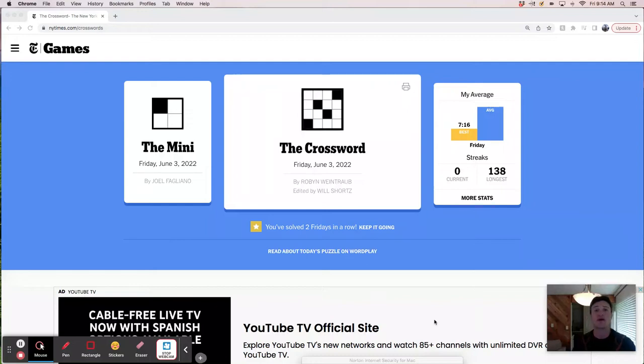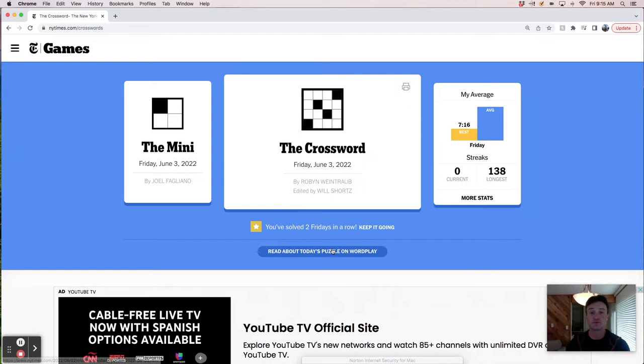Hey, good morning. It's Friday, June 3rd, and we're going to solve the New York Times crossword puzzle. Today's puzzle is constructed by Robin Weintraub. That's a name we see pretty often, so probably no huge surprises here. It's Friday, so expecting it to be themeless and hopefully a little bit tricky. Let's take a look, see what we got here.